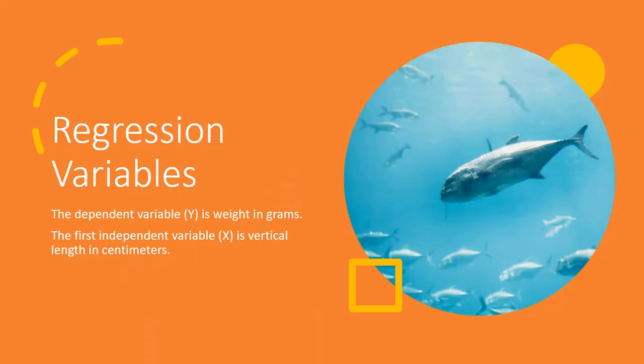For our regression analysis of this fish data, we will look at a dependent variable is weight in grams. In other words, given some other variable, what is our predicted weight in grams? So that's the dependent variable. Our first independent variable is vertical length in centimeters. The end game here is, can we predict with some level of confidence the weight in grams of a fish if I know the vertical length in centimeters?